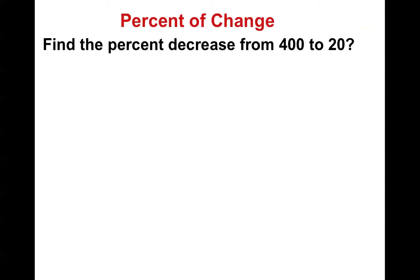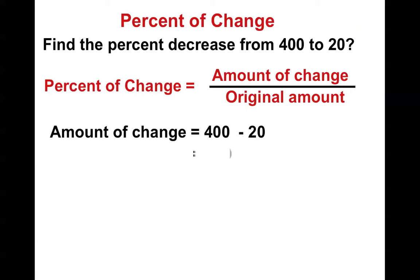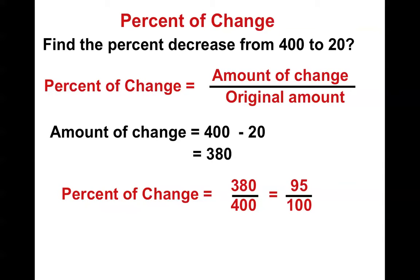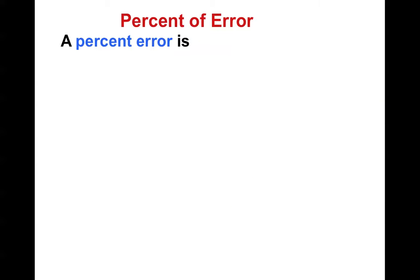So find the percent of decrease from 400 down to 20. That's going to be a big decrease. Why don't you guys see if you can handle this one? Alright, I'm back. So the formula stays the same. How much did it decrease? 380. And that means 380 over 400. Can we simplify that a little bit? Yeah. 95 over 100. Which makes it really easy, because anything over 100 is the percent. 95%.